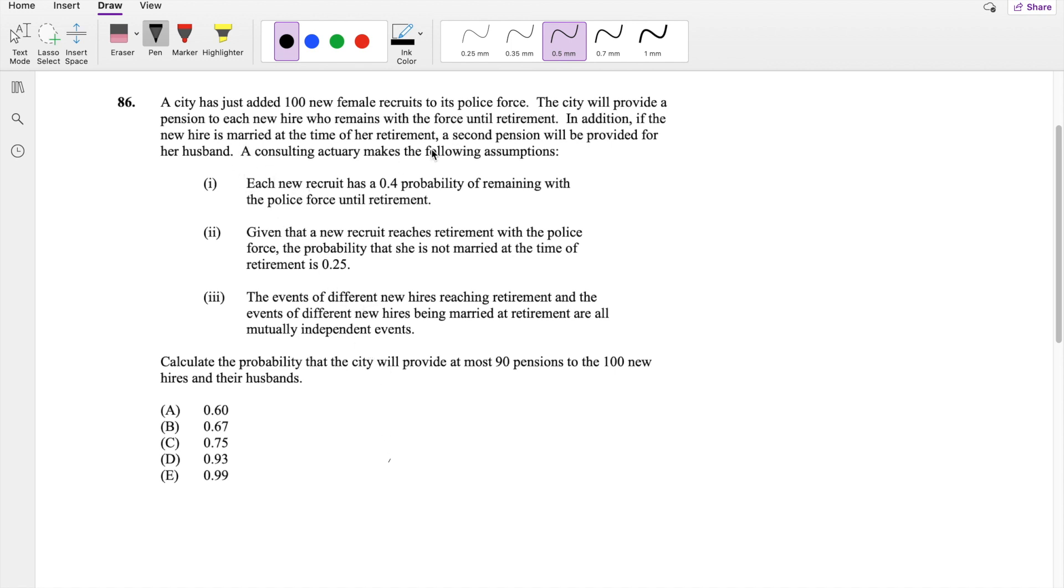They tell you that you can only get a pension if you stay with the company until retirement. There's 0.4 probability that stays with the company until retirement, but 0.6 drop out. If you drop out, you basically get zero dollars, so we don't really care about the people who drop out. The probability that she's not married at the time of retirement is 0.25, so not married is 0.25, which means married must be 0.75. These are all independent events.